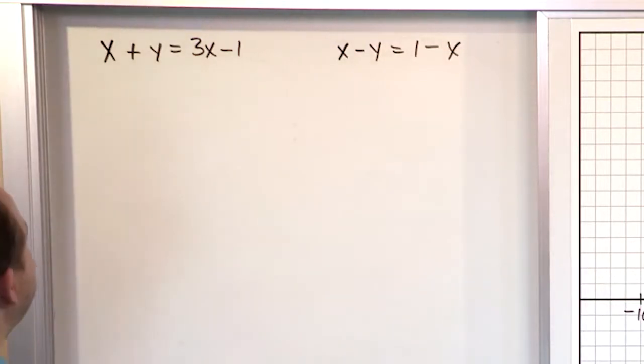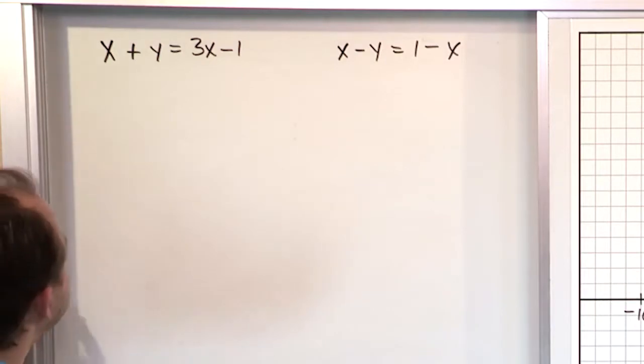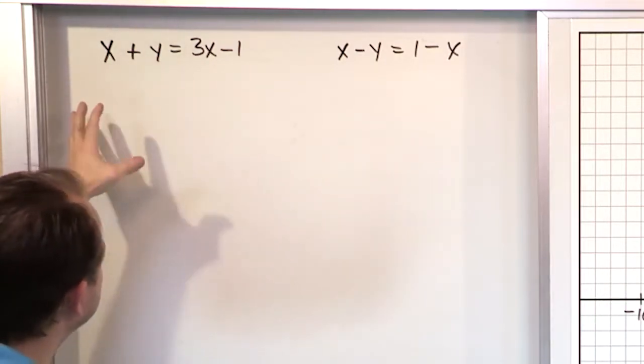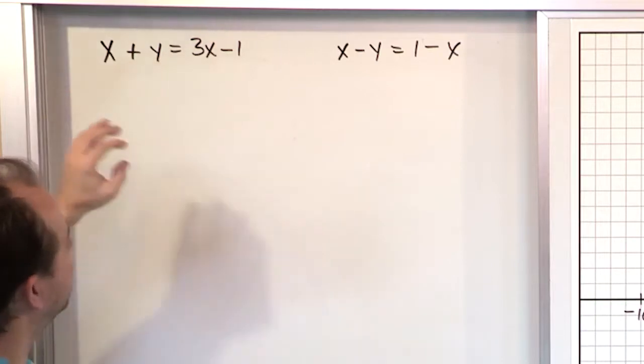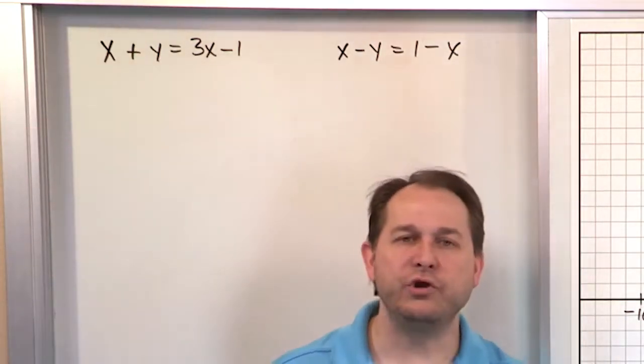The first thing you might do is you might look and say, these do not look like lines, these look nothing like anything I've seen before. And it is true that the form of this equation doesn't quite look like standard form, and it definitely doesn't look like mx plus b form, same thing here. But the deal is, you know that they're lines.